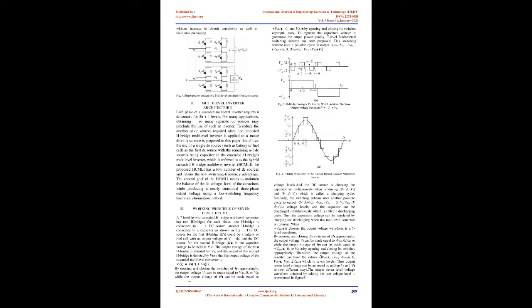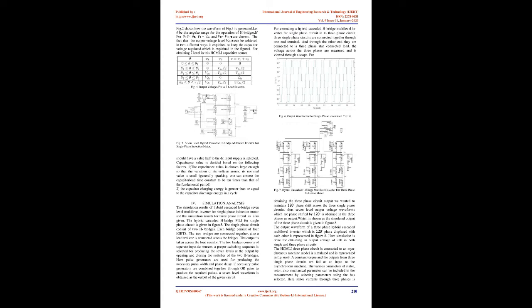Unlike the diode clamp or flying capacitor inverter, the cascaded inverter does not require any voltage clamping diodes or voltage balancing capacitors. This configuration is useful for constant frequency applications such as active front-end rectifiers, active power filters, and reactive power compensation. Choosing appropriate conducting angles for the H-bridges can eliminate specific harmonics in the output waveform. The hybrid cascaded multilevel inverter (HMLE) considered in this paper has a simple and modular structure and requires the least number of components compared to other types of multilevel inverters, providing flexibility in extending to higher number of levels without increase in circuit complexity.